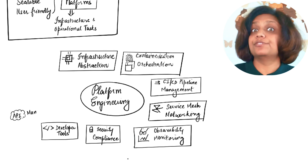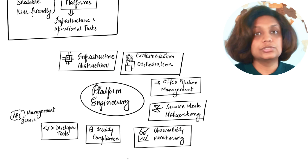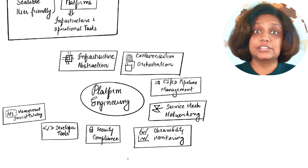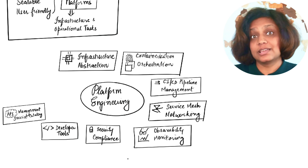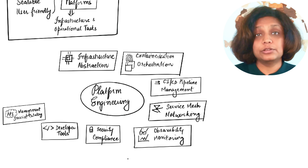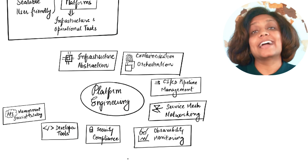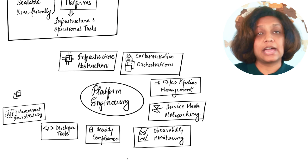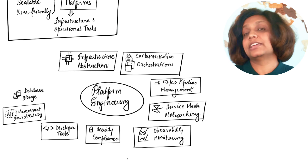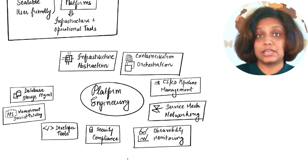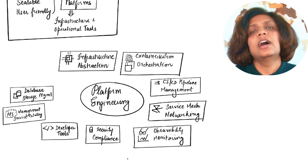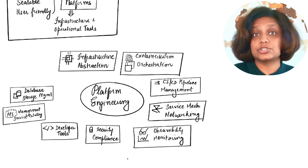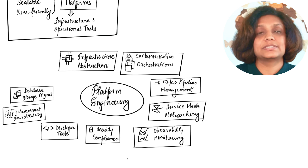API management and service catalogs: platform engineers often implement API gateways and service catalogs to manage internal and external API traffic, ensuring proper versioning, documentation, and access controls. Database and storage management can also fall in this category, which includes setting up and managing database clusters, implementing backups and recovery solutions, or providing developers with easy access to various storage options such as object store, block store, et cetera.